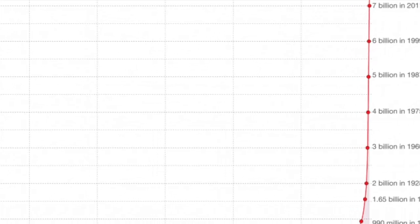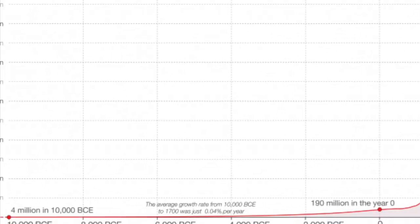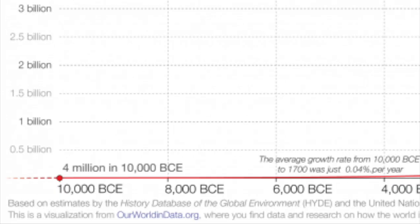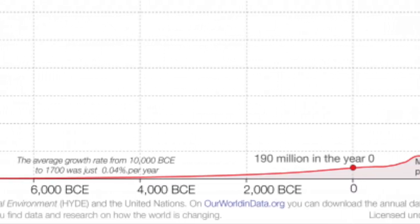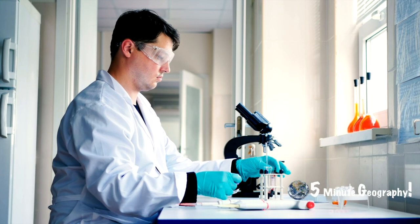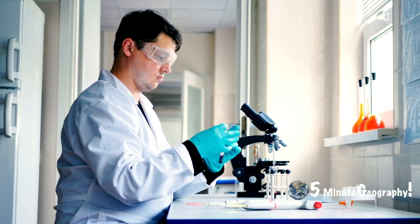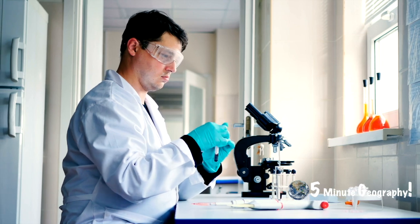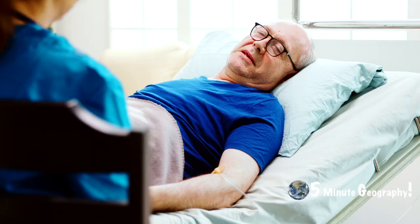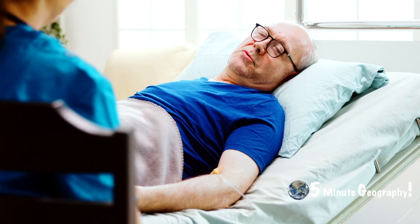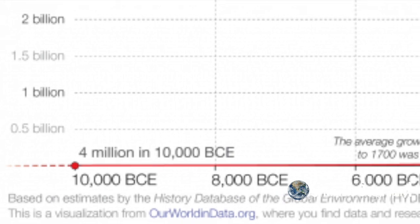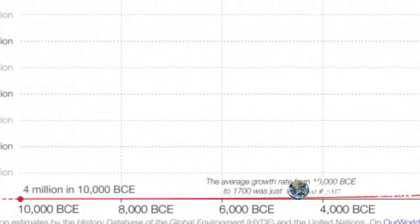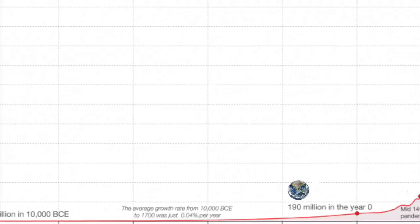If we look right back to 10,000 BCE we can see the population is pretty much stagnant. It's not until the development of vaccinations and medicines — where people begin to live longer and fewer people die — that the population then explodes.